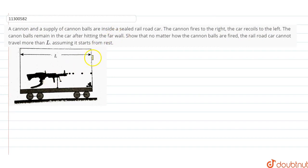When the cannon balls hit, they will stay here. Show that no matter how the cannon balls are fired, the railroad car is not able to travel more than L distance.